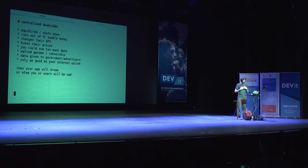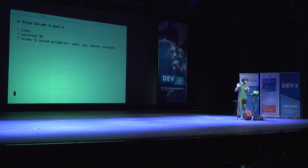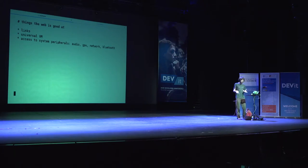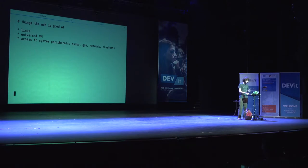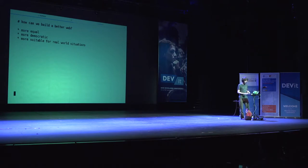Another big use case I'm personally very interested in is building things that work offline. Offline technology is inherently distributed and inherently different. Things I like about the web are URLs and links — it's a universal application runtime, you don't have to ship around binaries for particular platforms. You get access to different system services like a microphone or the sound cards or network. The question I pose is: how can we build a better web that's more equal, more democratic, and more suitable for the real world?